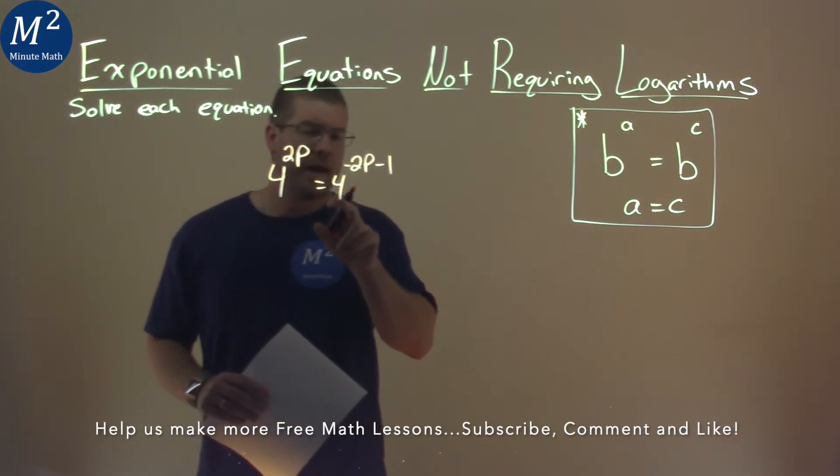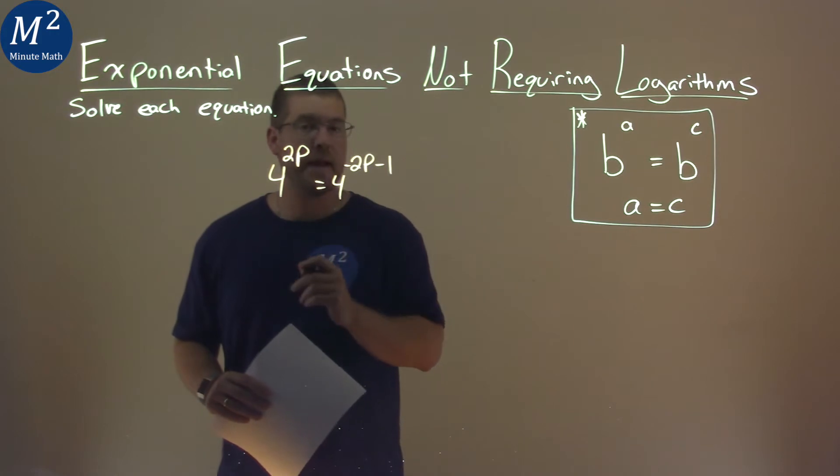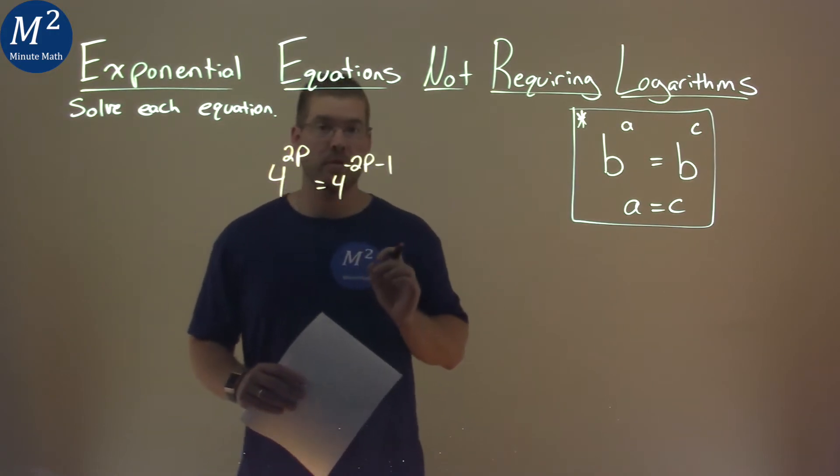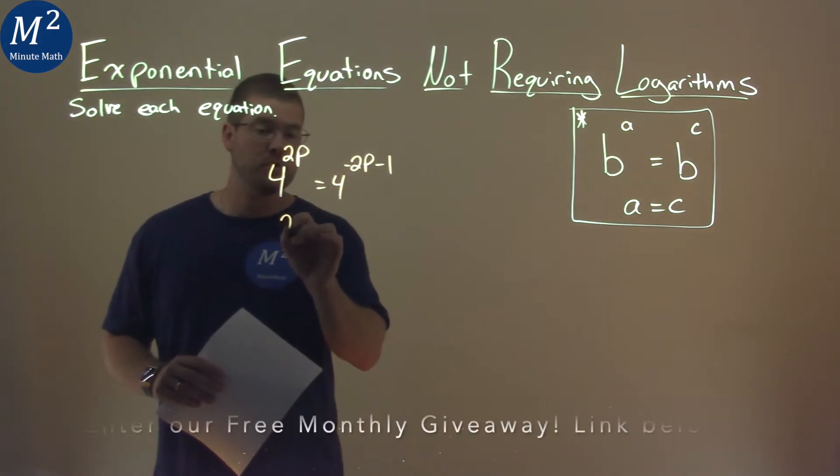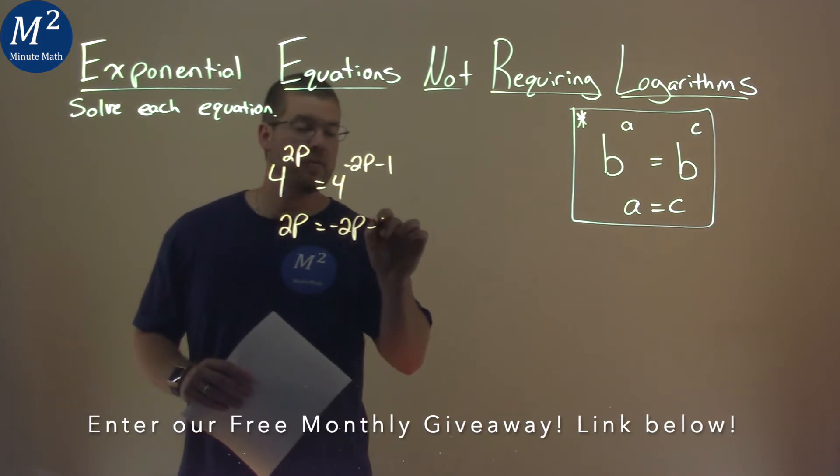Luckily, we already have the same base here of 4. When that happens, we just look to the exponents. We can take our exponents, 2p, and set it equal to negative 2p minus 1.